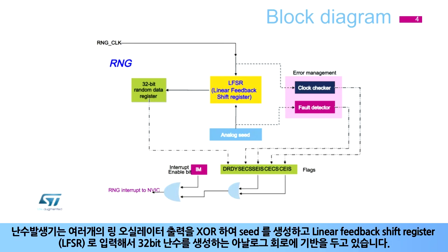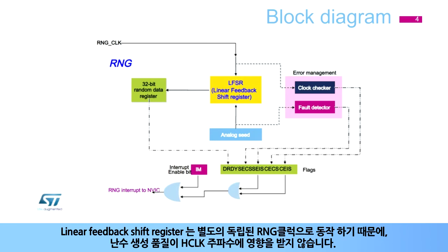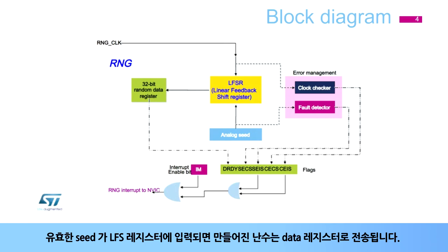The random number generator is based on an analog circuit made of several ring oscillators whose outputs are XOR'd to generate the seeds that feed a linear feedback shift register in order to produce 32-bit random numbers. The linear feedback shift register is clocked by a dedicated RNG clock signal so that the quality of the random number is independent of the HCLK frequency.